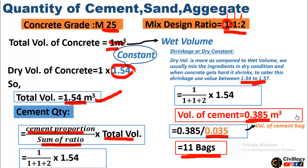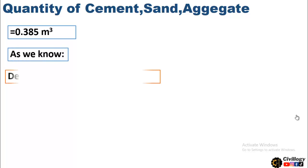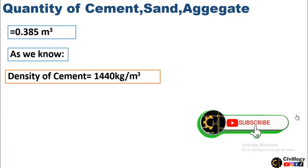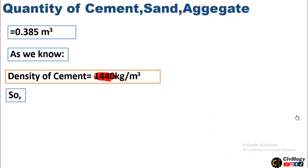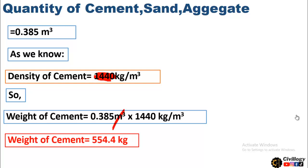This is a lot more cement compared to M5 and M7.5, which required about two or three bags. That makes sense because this is a rich concrete with a high cement proportion. To convert the volume of cement into weight, we use the density of cement which is 1440 kg per cubic meter. Multiplying the density by the volume, the units cancel out and the weight of cement equals 554.4 kilograms.